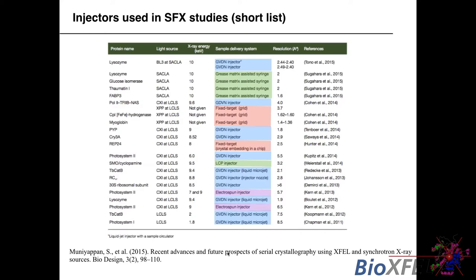There are various reviews on crystallography with a table of different injectors used over time. In the earlier days there were many GDVN liquid jet nozzles; the LCP injector came on the scene around 2014 and is increasingly used because it conserves sample. There are also lots of developments in fixed-target injectors and the electrospinning injector, which has been around since relatively early and is also quite useful for conserving sample.